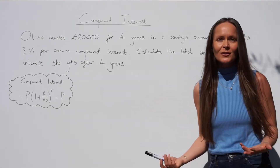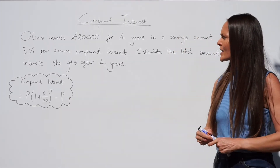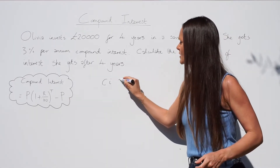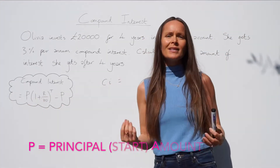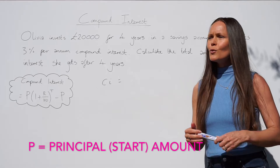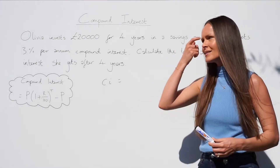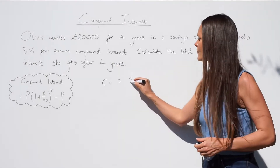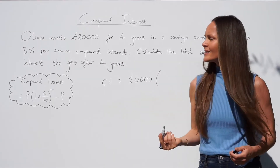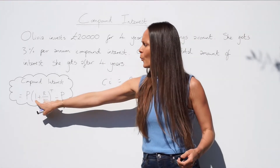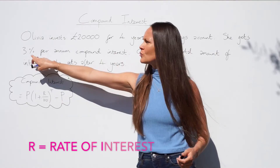As we do this question I'm going to show you the formula to work out compound interest. To work out compound interest we need to take the value P — this is the principal amount of money, so the amount Olivia started with, £20,000. Then we multiply P by one plus the rate of interest, so in this case three percent.